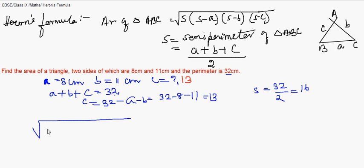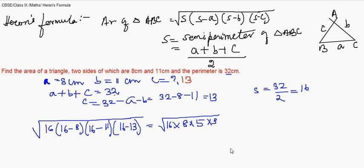So it is √(16(16-8)(16-11)(16-13)), which is √(16×8×5×3). That I think is giving us 8√30 cm². They all were in centimeters, so it is centimeter square. Let's move on to another problem with one more application.